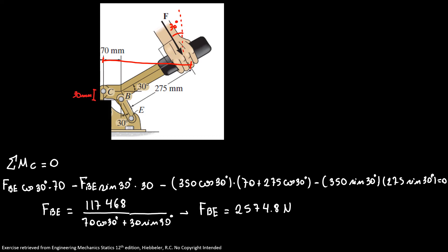Now that we discover FBE, we can do the sum of forces in x direction is equal to zero. So here we have our CX that I'm going to point to the right. So we have CX plus 350 cosine of 30 minus 2574.8 cosine of 30 is equal to zero.